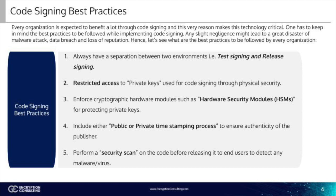Timestamp process, public or private: the timestamping process helps in verifying the authenticity of the publisher after the expiration of the certificate. A public timestamping authority can be used for cost benefit, but it is always suggested to use an internal timestamp authority to avoid public network access.